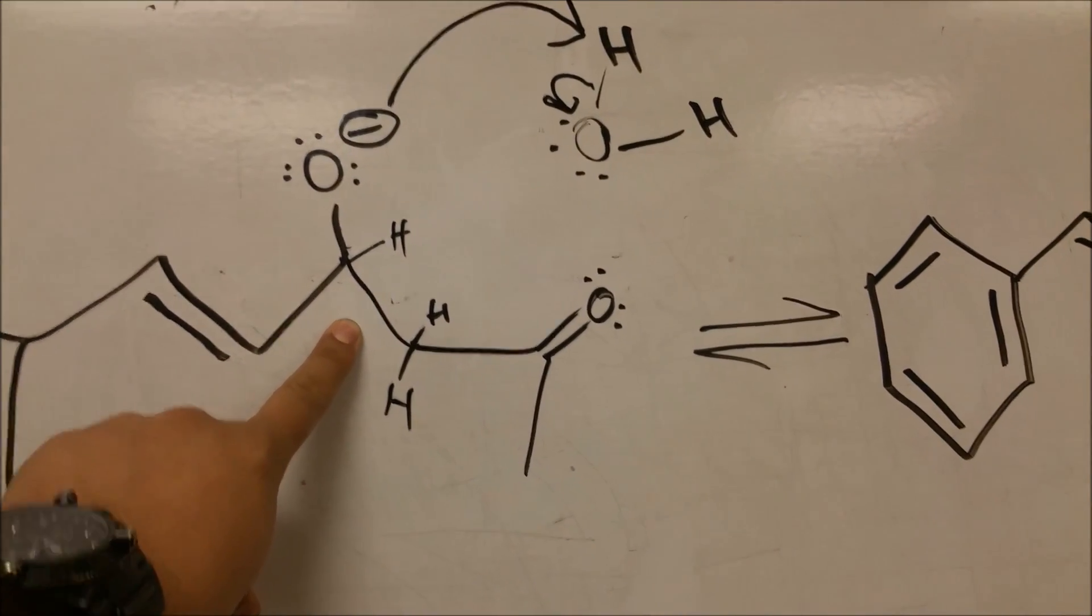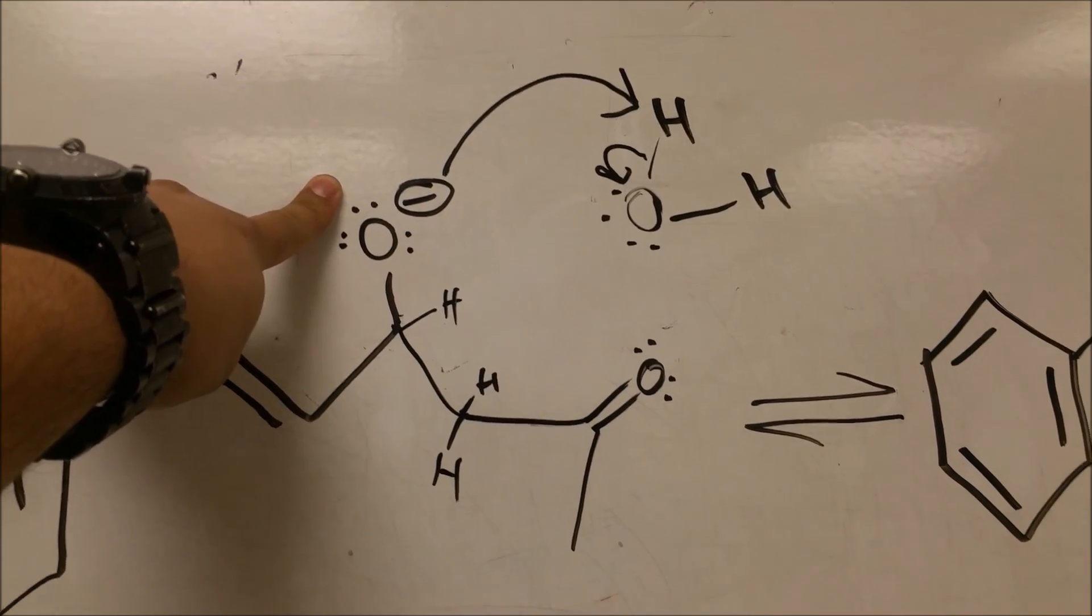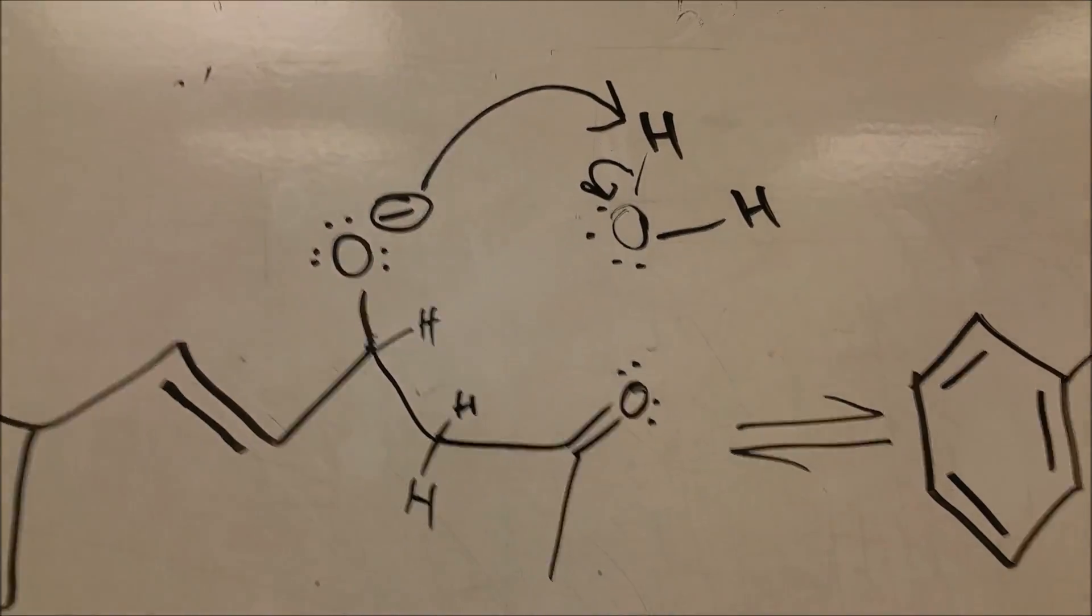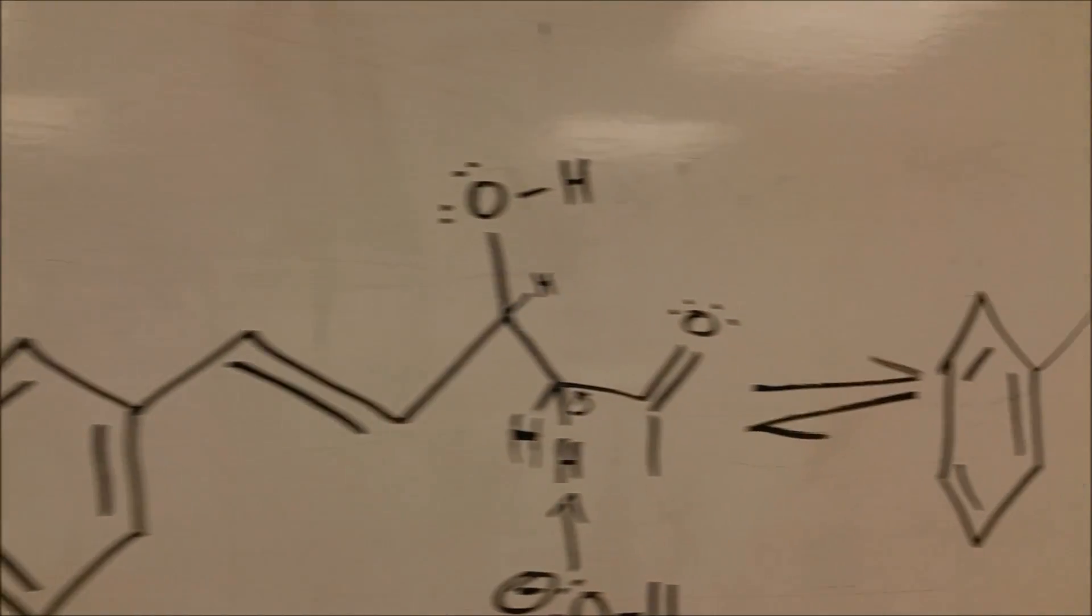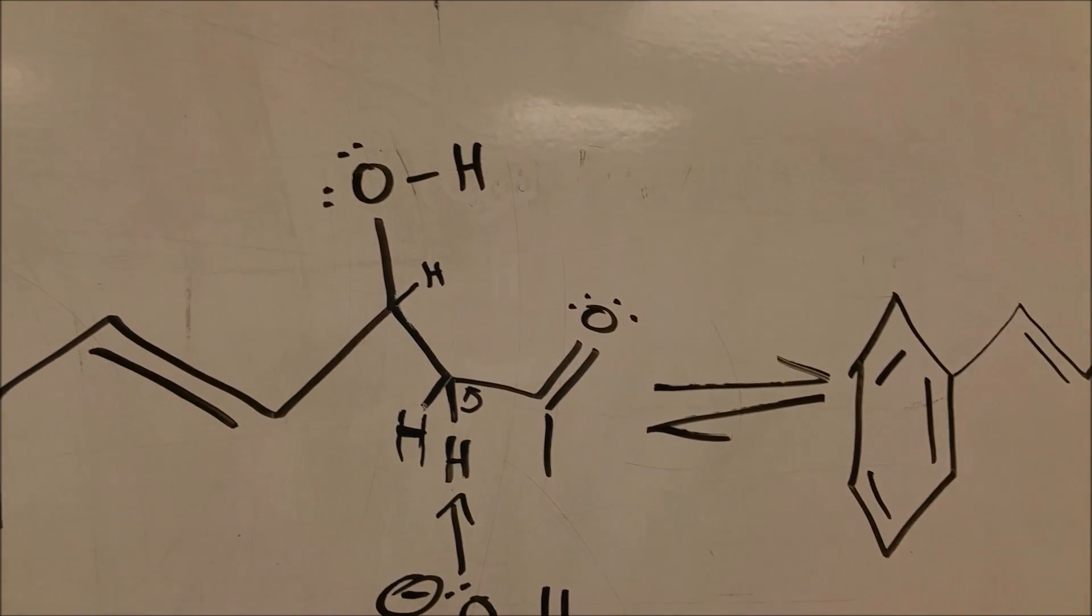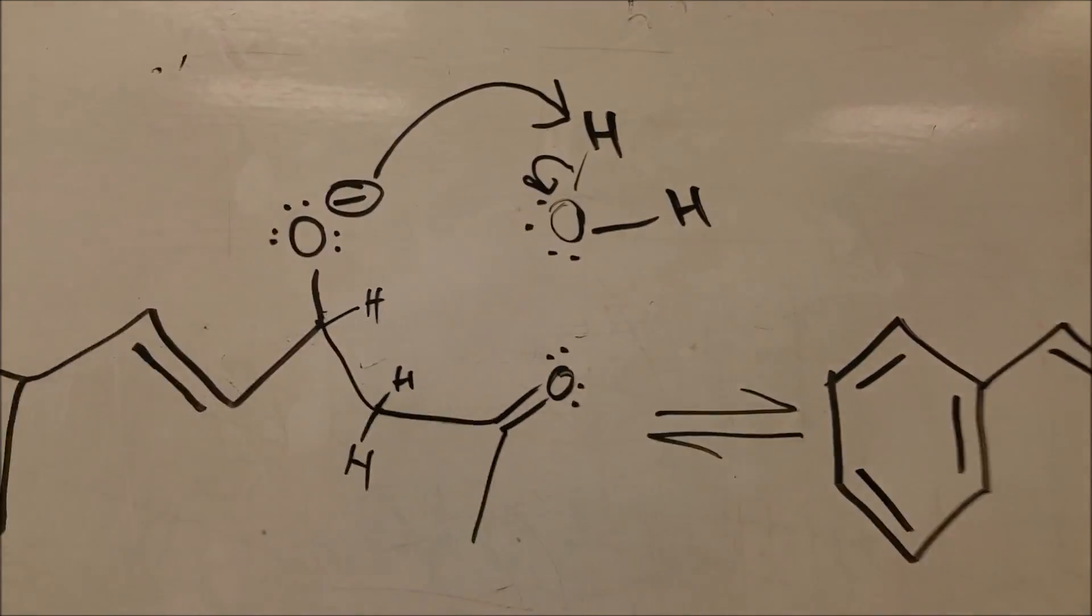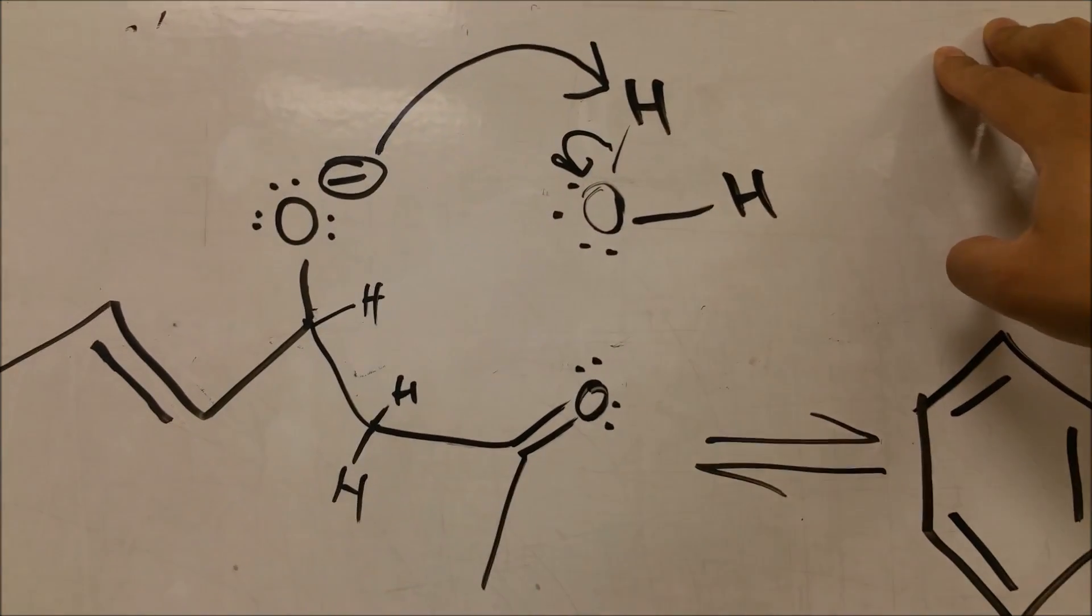Then, after that happens, the oxygen now that has a negative charge will take a hydrogen from a water molecule that's in the solution and form that alcohol group that you see there. And then, as you would expect, that water will now be hydroxide, an OH.